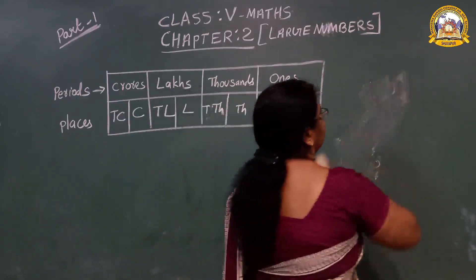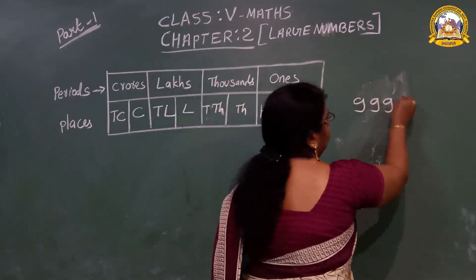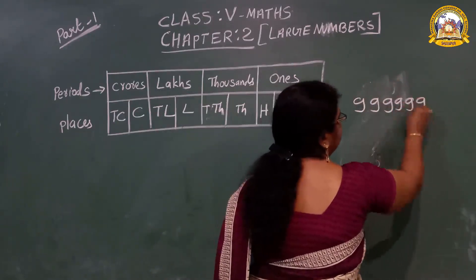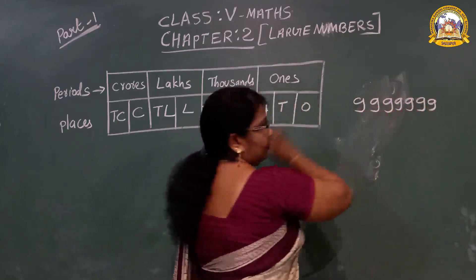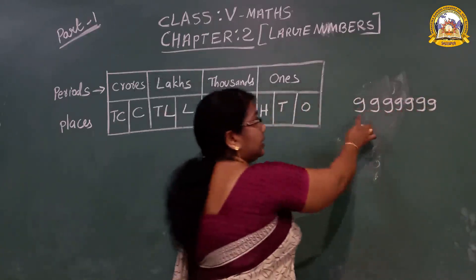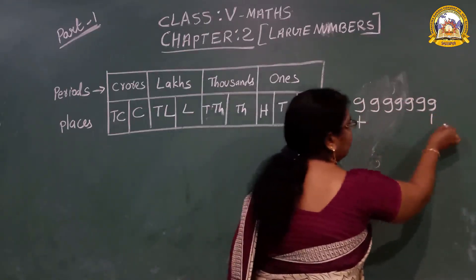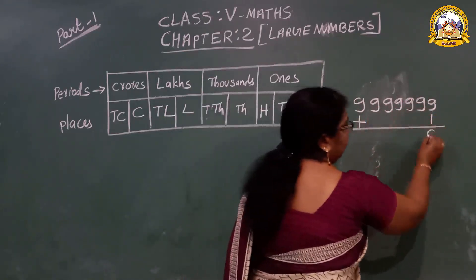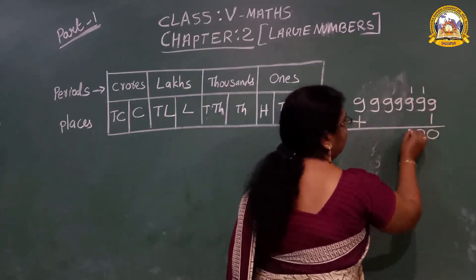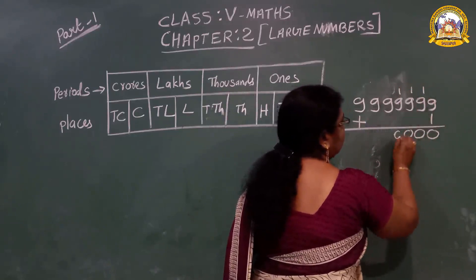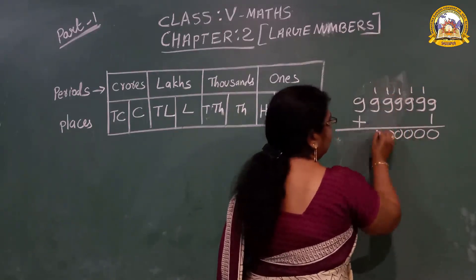Like that, with seven 9s — the largest 7-digit number is 99,99,999. If you add 1 to this number, 9 plus 1 is 10, carry 1, carry 1, carry 1, carry 1, carry 1, carry 1, carry 1 — and we get the smallest 8-digit number.